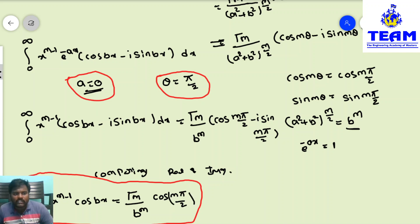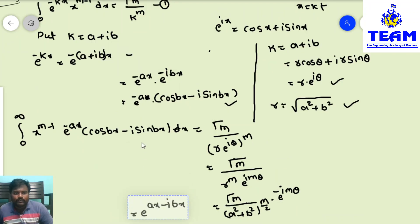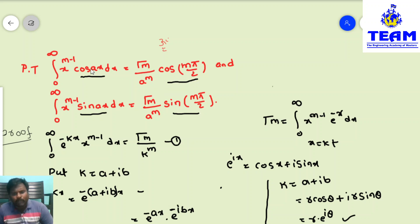This is exactly the given problem — just with b in place of a. So integral from 0 to infinity of x^(m-1) cos(ax) dx = gamma(m) / a^m · cos(mπ/2), which confirms our first result is correct.